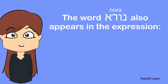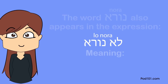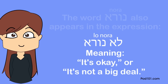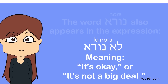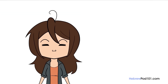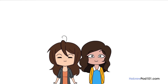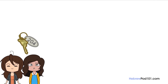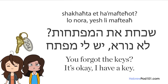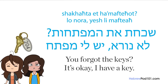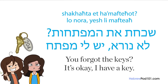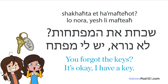The word 'norah' also appears in the expression 'lo norah,' meaning something like 'it's okay' or 'it's not a big deal.' For example: say you're with your roommate and you realize you forgot your keys. Your roommate could say 'shakhakhta et ha-muftekhot? Lo norah, yesh li mufteakh' — you forgot the keys? It's okay, I have a key.